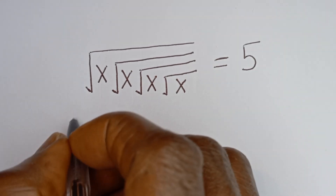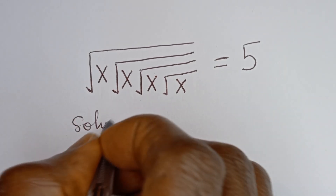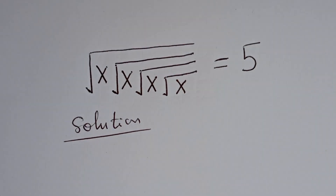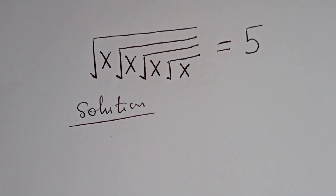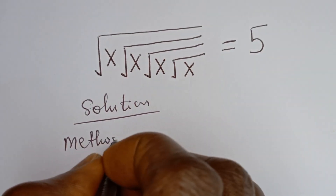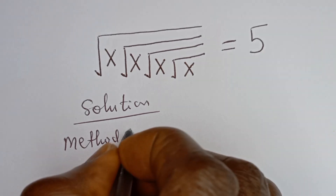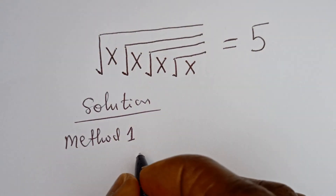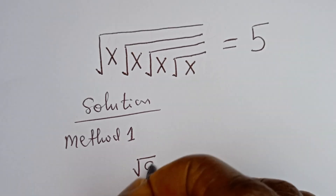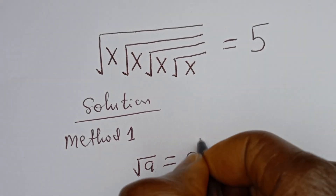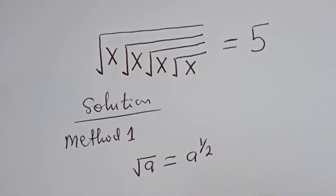Let's consider the first method — Method 1. Take note that if you have square root of a, this is equal to a to the power of 1 over 2.